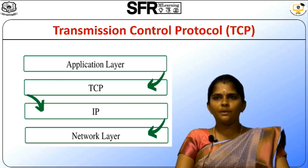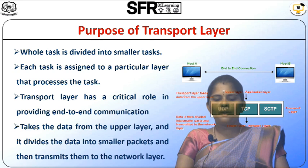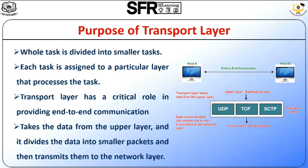Next we will see the purpose of TCP. TCP uses a layered architecture where the whole task is divided into smaller tasks. Each task is assigned to a particular layer that processes the task. In the TCP/IP model, five layers are: application layer, transport layer, network layer, data link layer, and physical layer. The transport layer has a critical role in providing end-to-end communication to the application processes. It creates more than 65,000 ports so that multiple applications can be accessed at the same time. It takes the data from the upper layer, divides it into smaller packets, then transmits those packets into the network layer.